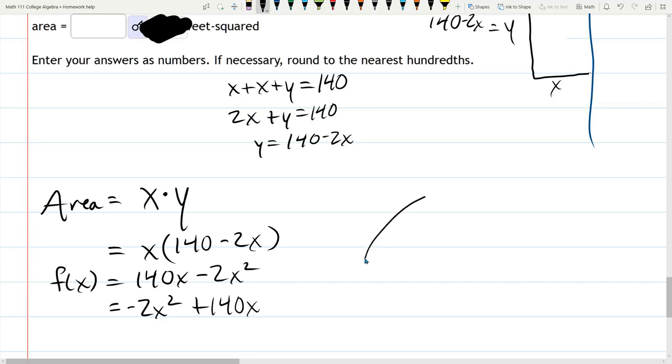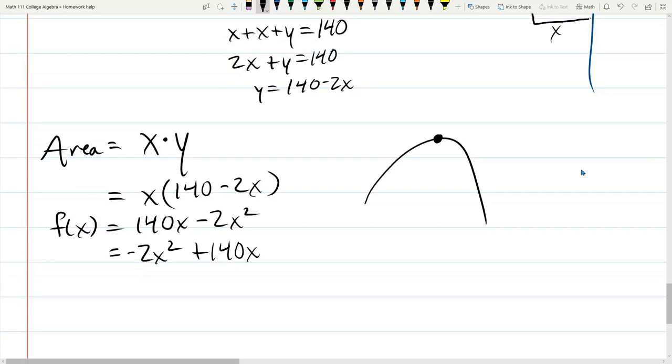All right, sad parabola. And what we want to do, and the sad parabola represents the area. We want to maximize it. So we want the maximum value of this parabola. Good news is any quadratic, if it's sad, the maximum is the vertex.